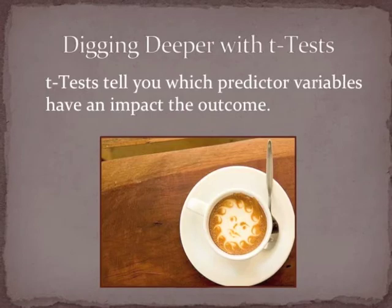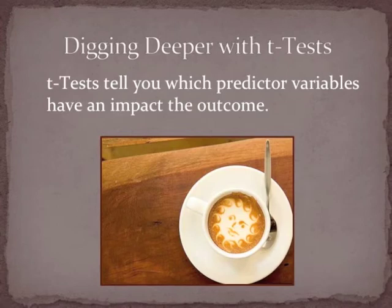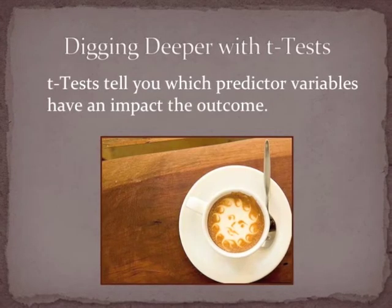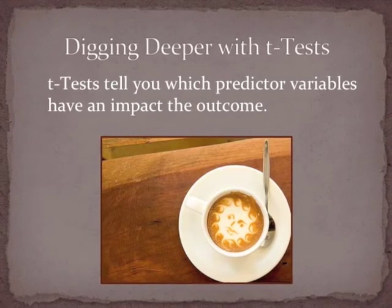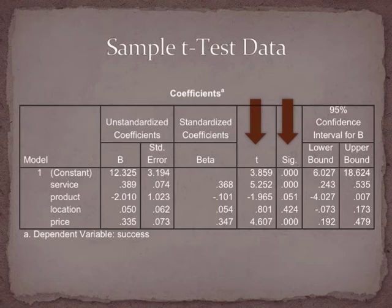So how do we find out more? Check out the t-tests. Now we know that some of the factors Carlos identified do seem to have an impact on his success. To get more information on each of these factors and their impacts, the regression output also includes separate t-tests for each of the variables. How much do each of these four factors seem to affect Carlos's success when other variables are held stable? The service and price proved to be significant, but the product and location didn't really seem to have that much of an impact.